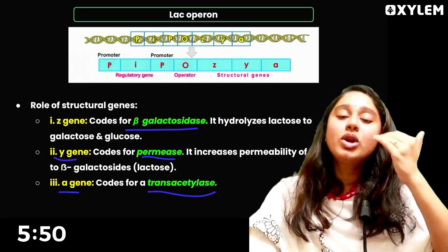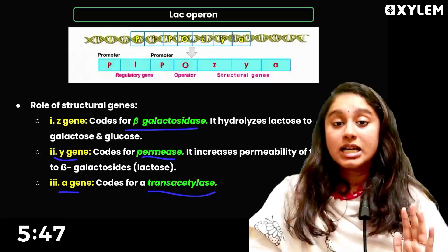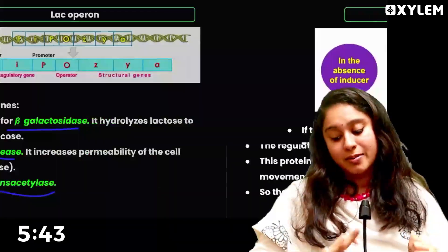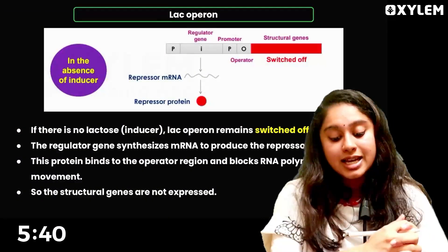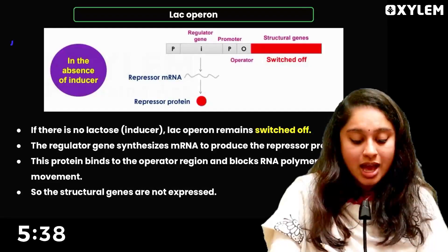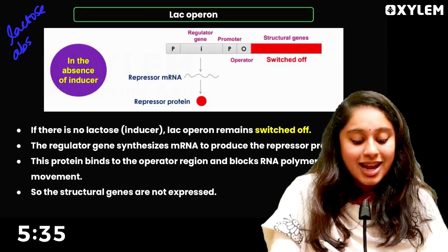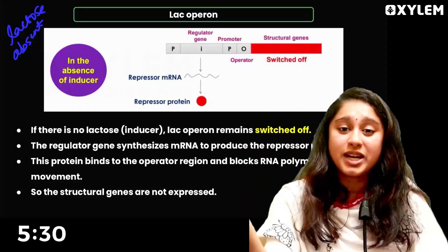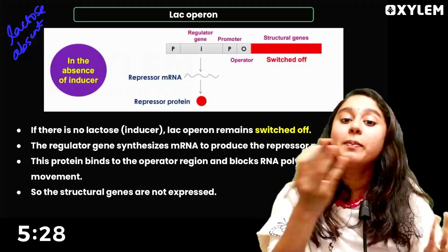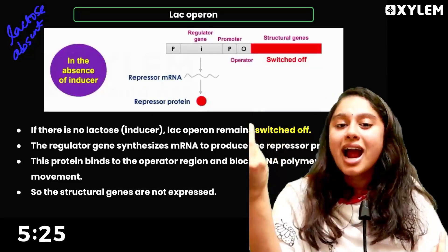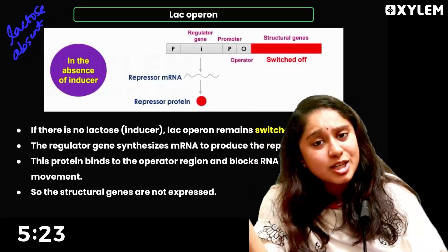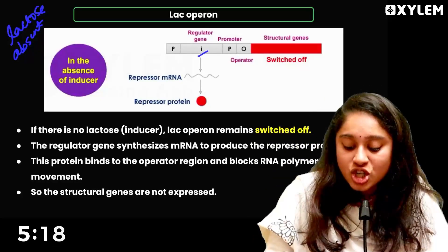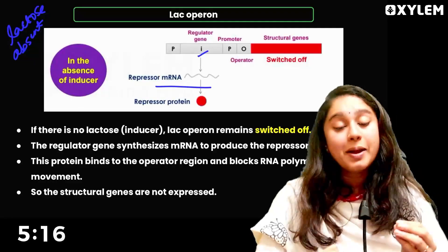There are 3 enzymes encoded by these structural genes. Now, if there is no lactose present, there is no point synthesizing these enzymes — it would be a waste. So what happens is: the cell will produce a repressor protein.